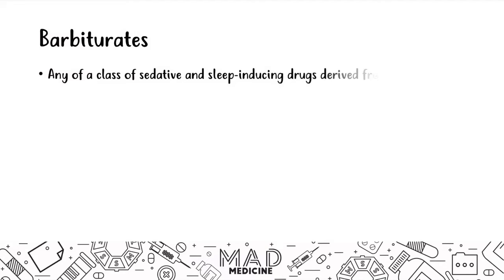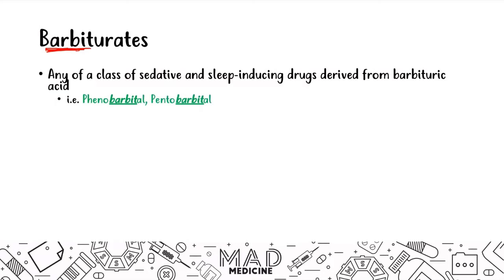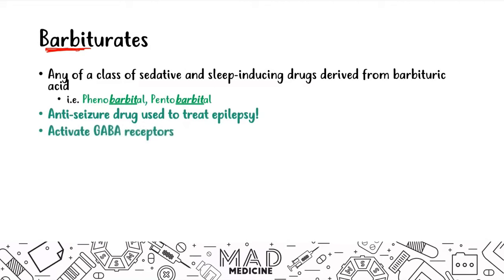Barbiturates are any class of sedative and sleep-inducing drugs that are derived from barbituric acid — that's where the name comes from. Examples include phenobarbital and pentobarbital. Any drug with the letters 'barbitol' or 'barbit' in the name is classified as a barbiturate.